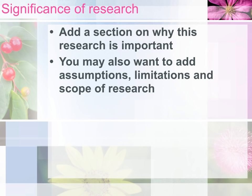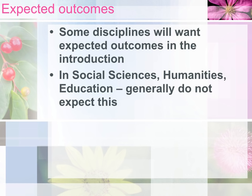Then you might have sections like what is the significance of this research and what are the limitations and scope. I would definitely have a section on the significance of this research, because you want to spell that out for your reader — why this is important. Your discipline or department may have other components they want you to include in the introduction. In the social sciences, humanities, or education, you generally don't put the expected outcomes of your research in the introduction, but in the sciences and perhaps engineering that's much more common. So this is something you would need to look up and see if it should go into the introduction.